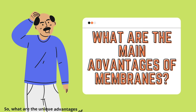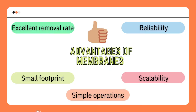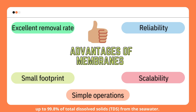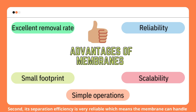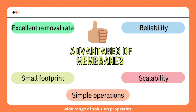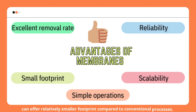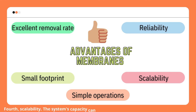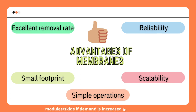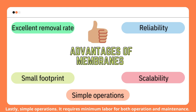What are the unique advantages of membranes compared to conventional filtration methods? First is excellent removal rate — for instance, reverse osmosis membrane can remove up to 99.8% of total dissolved solids from seawater. Second, its separation efficiency is very reliable, meaning the membrane can handle a wide range of solutions. Third is small footprint: due to its compact module design, the membrane system offers a relatively smaller footprint compared to conventional processes. Fourth is scalability — the system's capacity can be easily upscaled by adding more membrane modules if demand increases. Lastly, simple operations, as it requires minimum labor for both operation and maintenance.